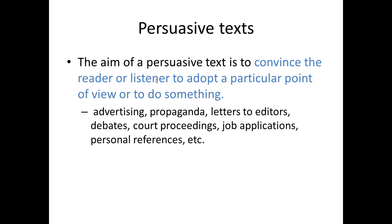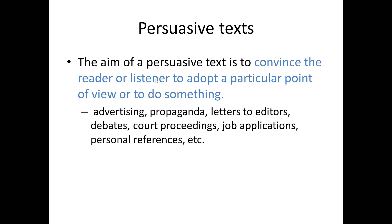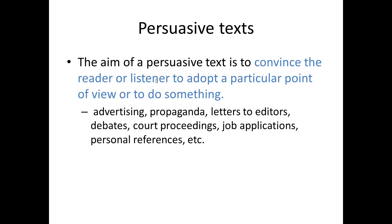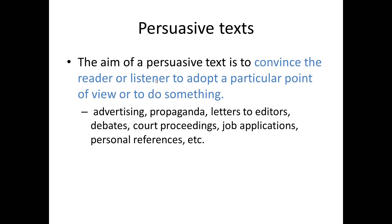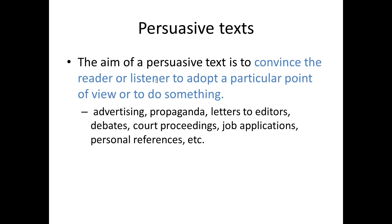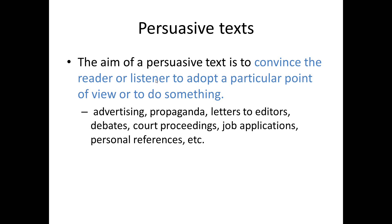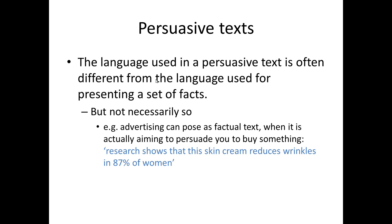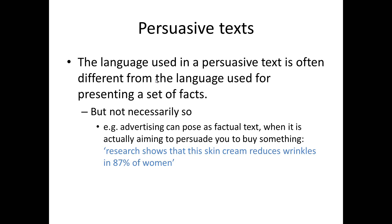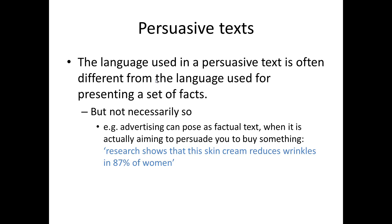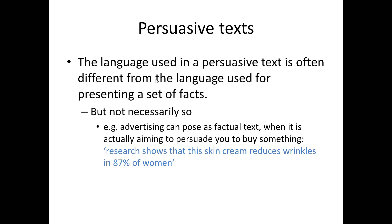The aim of a persuasive text is to convince the reader or listener to adopt a particular point of view or to do something. Examples include advertising, propaganda, letters to editors, debates, court proceedings, job applications, or personal references. The language used in a persuasive text is often different from the language used for presenting a set of facts, but it's not always necessarily so. For example, advertising can pose as factual text when it's actually aiming to persuade you to buy something: 'Research shows that this skin cream reduces wrinkles in 87% of women.' The point of this is to make you think that buying the product is a logical and rational thing to do.